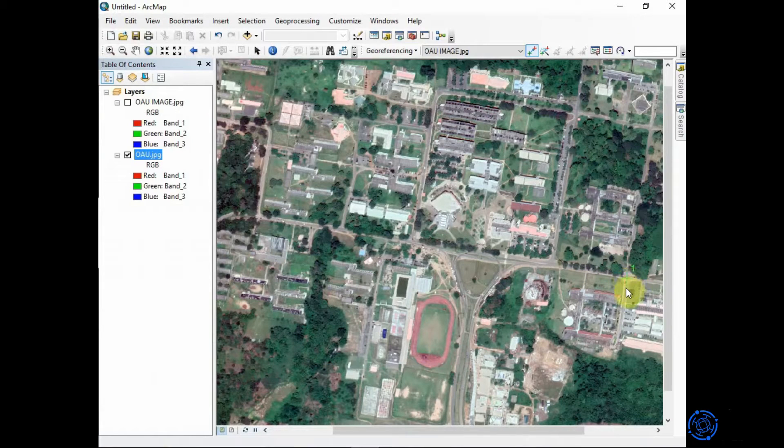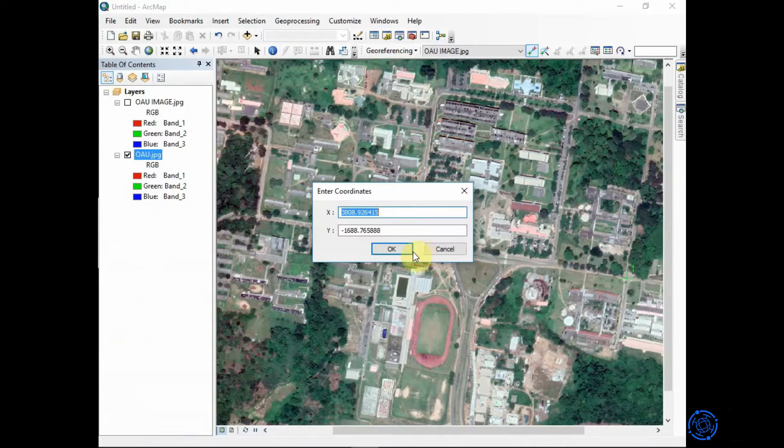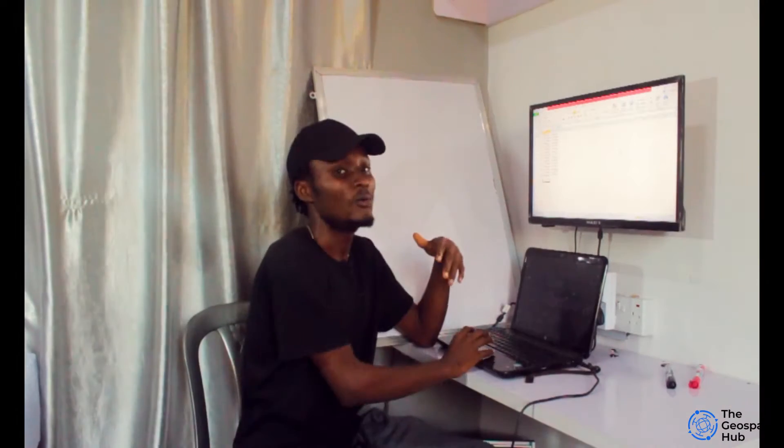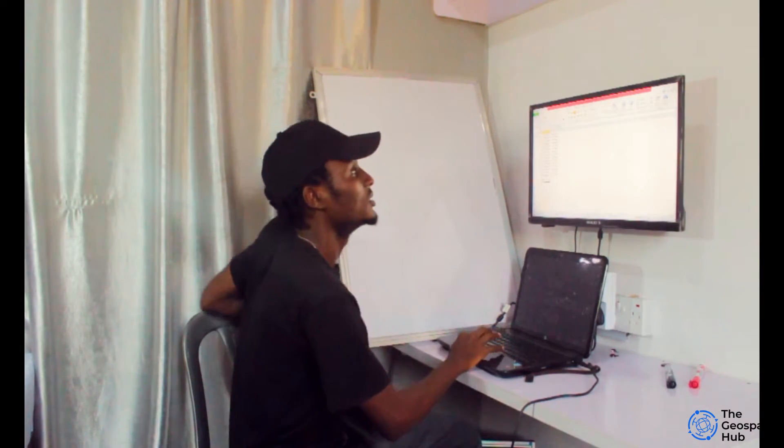Now it's asking for input X and input Y. Here's where the problem comes - a lot of people cannot differentiate: is longitude X? Is latitude Y? Is latitude X or is longitude Y? Many people don't know, so we'll be explaining that in detail. Let's move to the whiteboard.